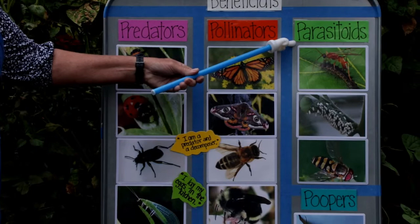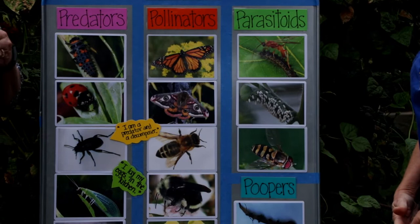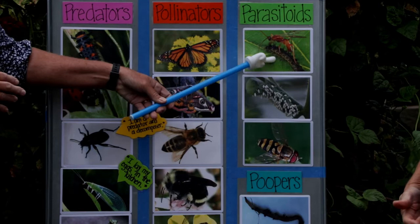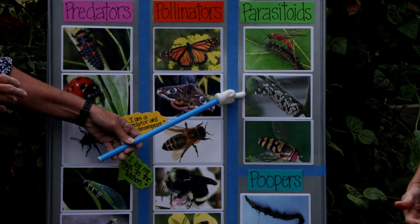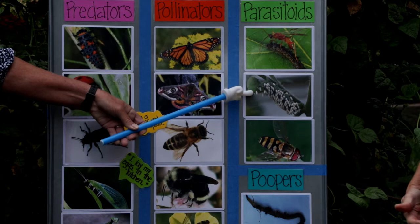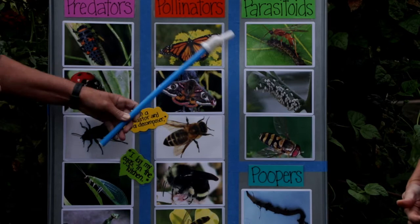Our third P is parasitoids. That's a fancy word meaning the beneficial insect lays its eggs in the larva of a harmful insect. At the top we have a parasitic wasp actually depositing eggs on a caterpillar that is busy eating the plants. The second picture shows a hornworm on a tomato plant — you can see all the eggs that a parasitic wasp or fly has laid on that caterpillar. The eggs will hatch and dine on that caterpillar, making it the end of that caterpillar's life.